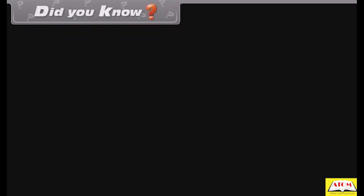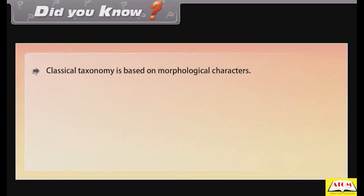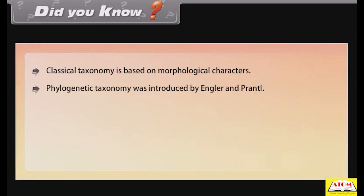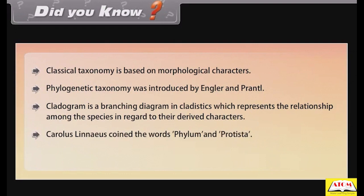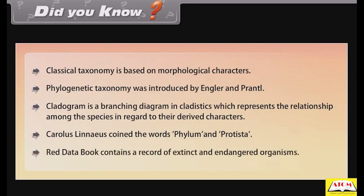Did you know? Classical taxonomy is based on morphological characters. Phylogenetic taxonomy was introduced by Engler and Prantl. A cladogram is a branching diagram in cladistics that represents the relationship among species with regard to their derived characters. Carolus Linnaeus coined the words 'phylum' and 'Protista.' The Red Data Book contains a record of extinct and endangered organisms.